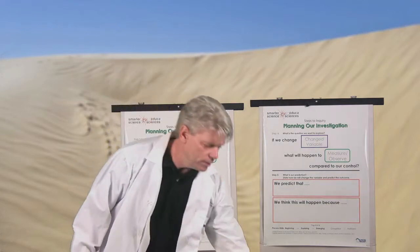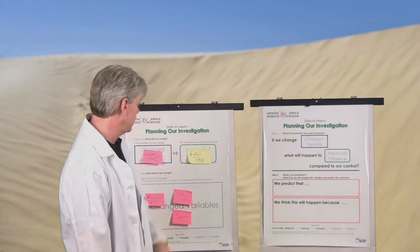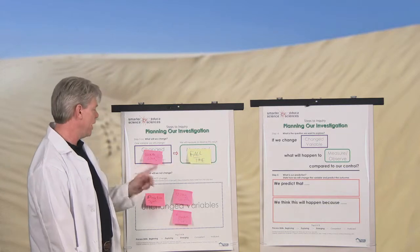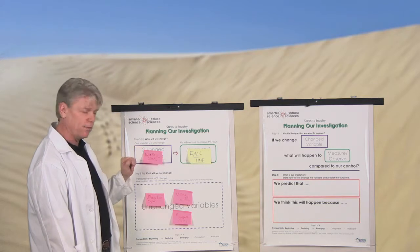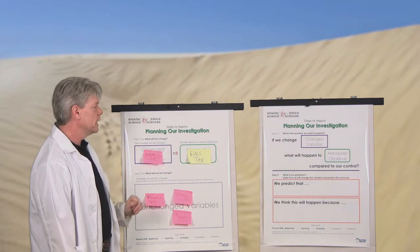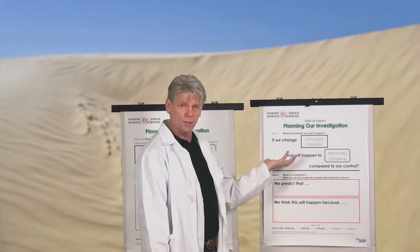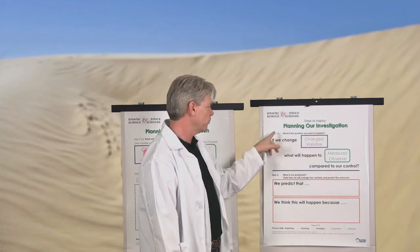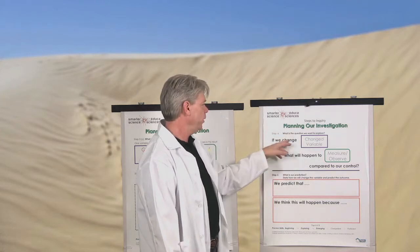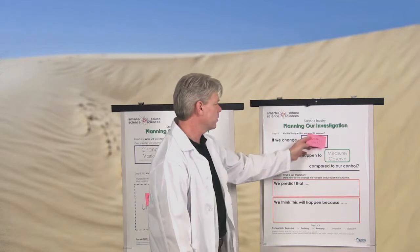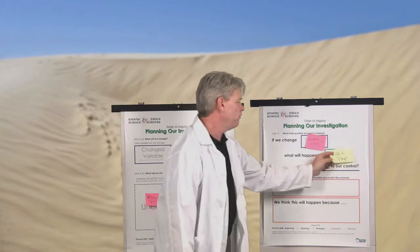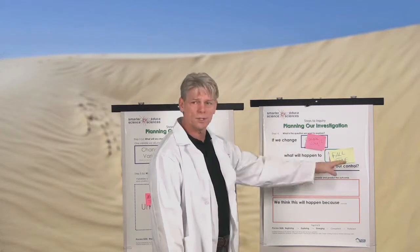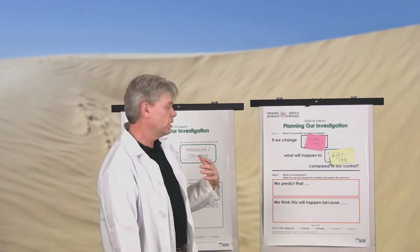Back to the pengucopter — students have gone through Poster 3, organized the variables, and established they're measuring fall time while manipulating wing length and controlling everything else. The final Poster 4 has writing stems in it — here's the literacy connection. We want students to be very clear about their question before they begin. Step 4 asks: what is the question we want to explore? The stem reads: if we change the wing length, then what will happen to the fall time compared to our control? Students move the post-its over and write their own question to keep in front of them throughout the process.